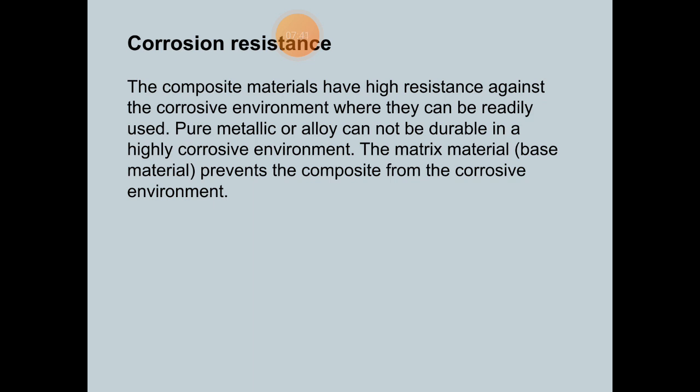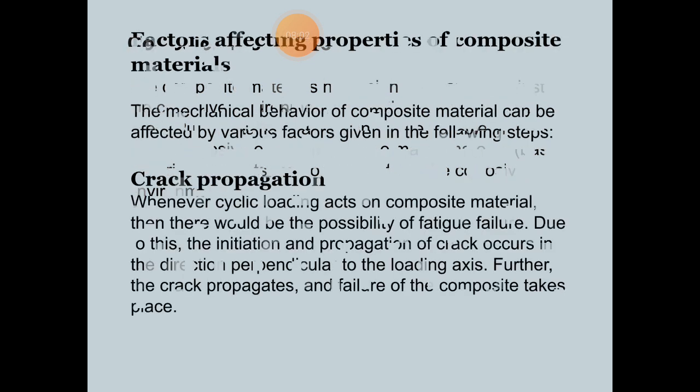Next is corrosion resistance. Composite materials have high resistance against corrosive environments and can be readily used in such conditions, whereas pure metallic or alloy materials cannot be durable in high corrosion environments. The matrix material, which is the base material, protects the composite from corrosive effects.